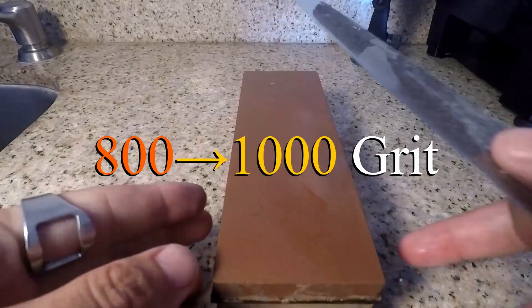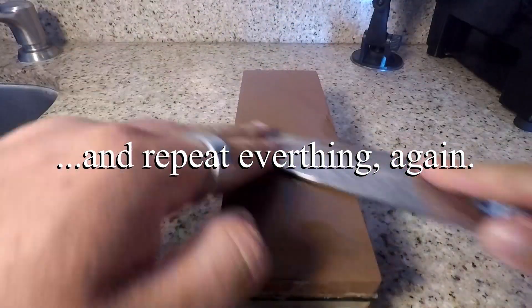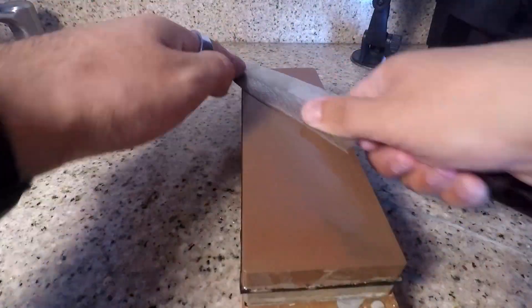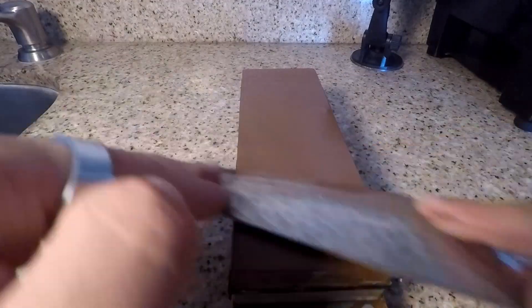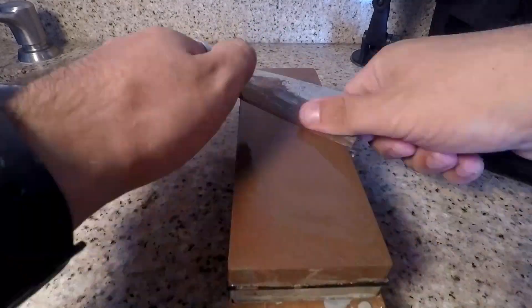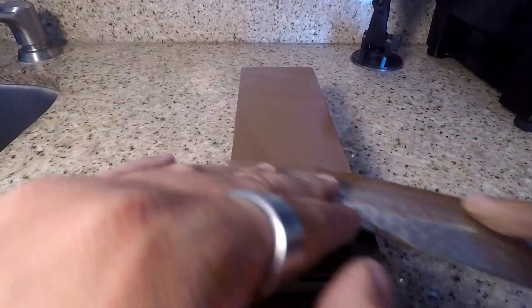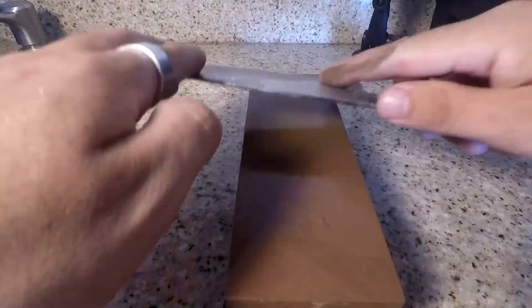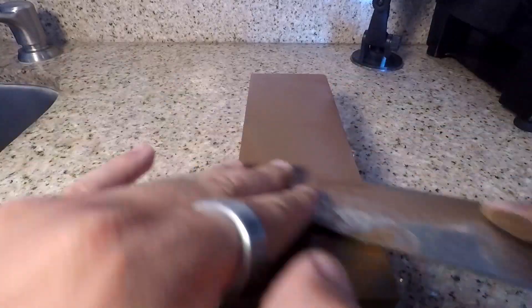Just as before we're gonna move on to the next grit and this as I mentioned is the 1000 grit. And so now that's when the knife is actually gonna start to feel sharp but don't get misconstrued and stop early because you feel like it's sharp because you definitely want to follow all the way through the process. Okay so again we're gonna start back doing 15 reps on each side and then we're gonna flip and go to 14 and work our way down all the way to one again.